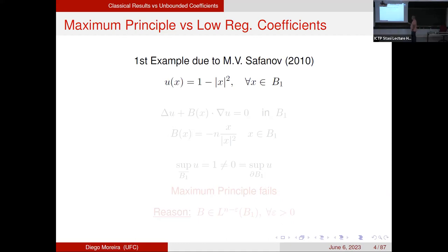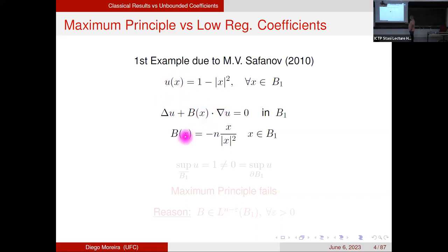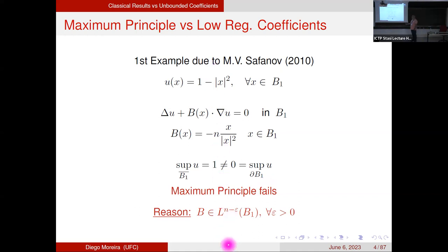The first example is due to Safonov — a very nice and simple example from 2010. Consider the function u(x) = 1 − |x|², which satisfies a simple linear elliptic equation: Δu plus a drift term, where the drift coefficient b is given by x/|x|². The sup of u is not attained on the boundary, so the maximum principle fails. The reason is the low regularity of the coefficient: b is in L^{n−ε} for every ε but not in L^n.